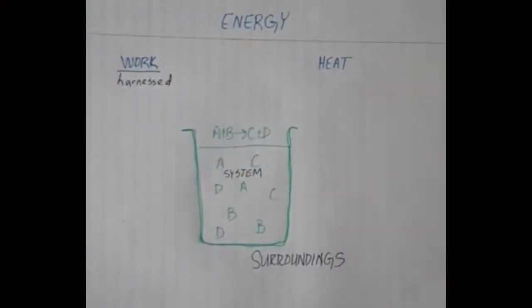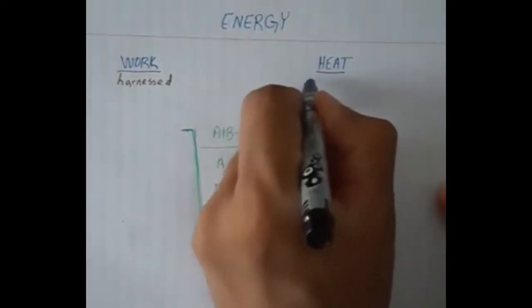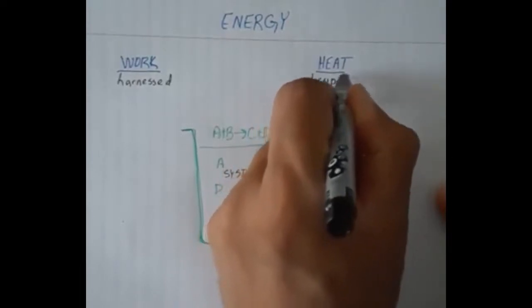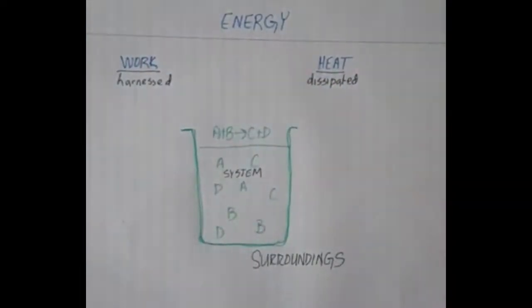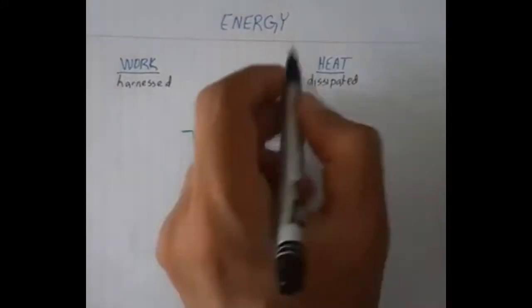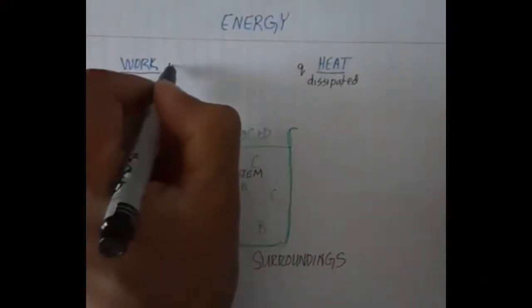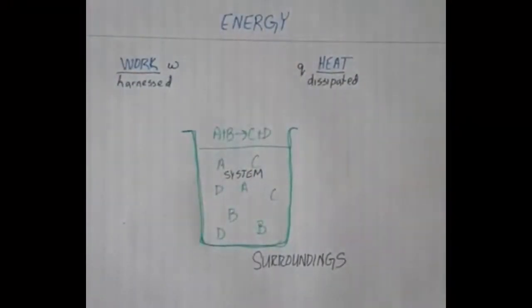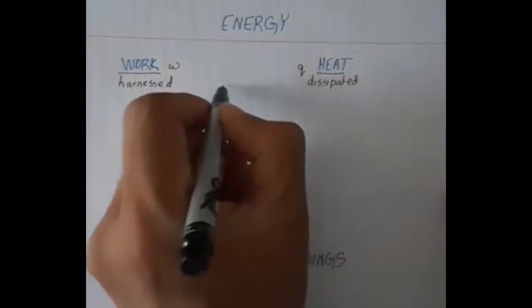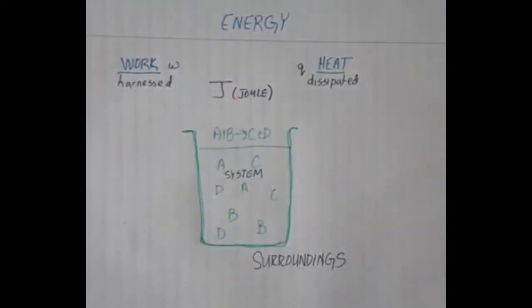We contrast that with energy that is dissipated — energy that cannot really be utilized and just goes into the atmosphere or the universe. We'll call that heat, abbreviated as lowercase q. Work, which is useful energy, has the abbreviation w. The units of energy are joules, which is the SI base unit for energy. We usually see it in chemical reactions in joules per mole or kilojoules per mole.